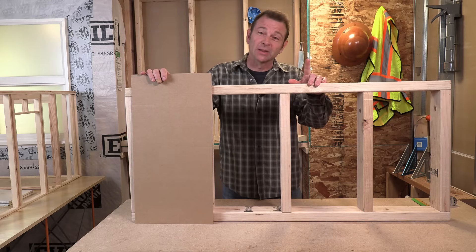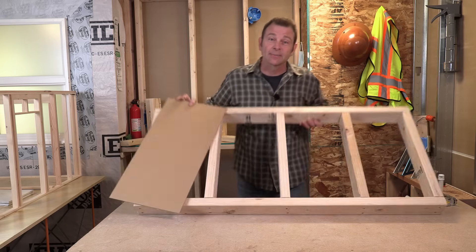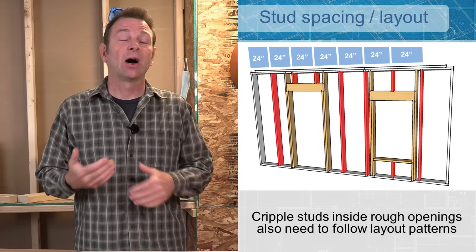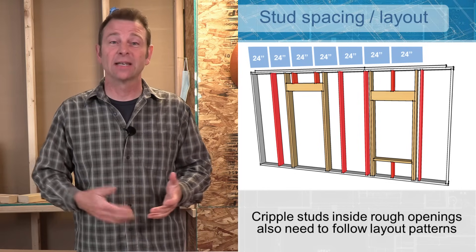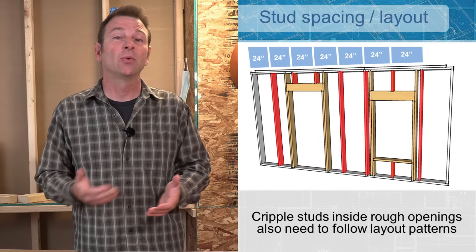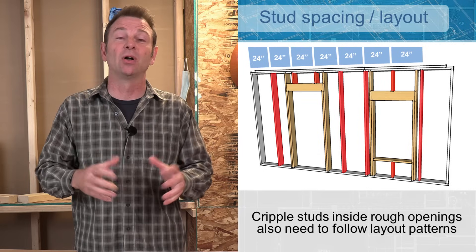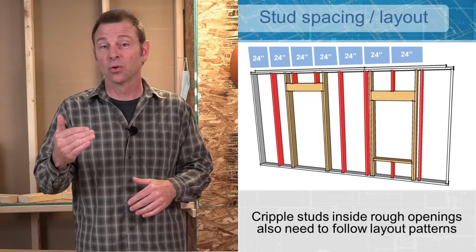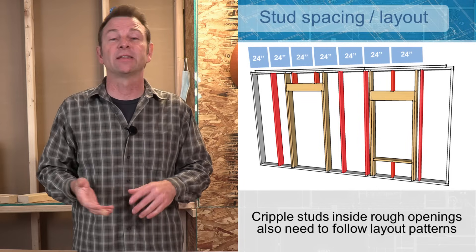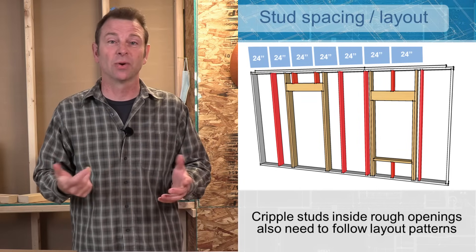Up till now we've been looking at a wall with no rough openings — that's not very realistic. Most walls will have doors and windows in them. Our layout does not go away just because we've cut openings into our framed walls. We have to consider that layout in any of the partial or cripple studs in that wall — above a doorway, or above or below a window. All of those should follow that same pattern, whether it's 24 on center, 16 on center, or 12 on center.